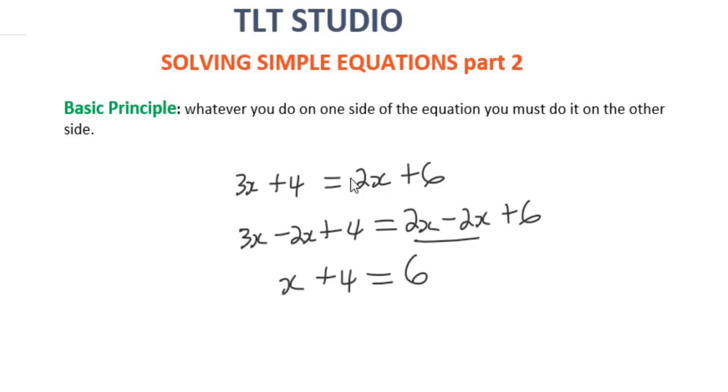As I said, whatever you are going to do, you do it on the right hand side as well. So we are going to have x plus 4 minus 4 equals 6 minus 4. So now we are left with x equals 2.